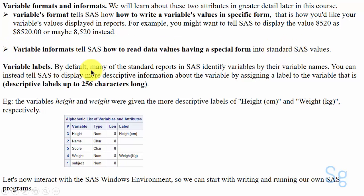Variable labels: By default, many of the standard reports in SAS identify variables by their variable names. You can instead tell SAS to display more descriptive information about the variable by assigning a label to the variable, that is a descriptive label up to 256 characters long.